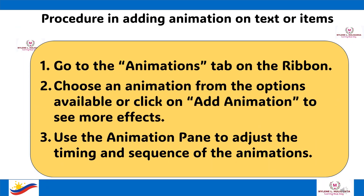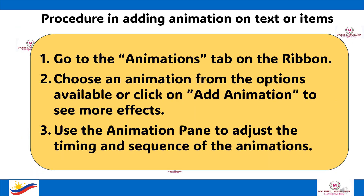Procedure in adding animations on text or other items: first, go to the Animations tab on the ribbon. Then choose an animation from the options available, or click on Add Animation to see more effects. Use the Animation Pane to adjust the timing and sequence of the animations.